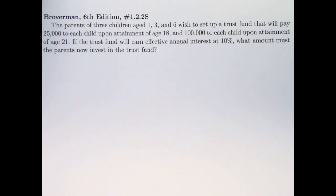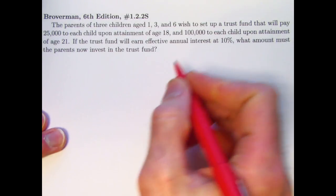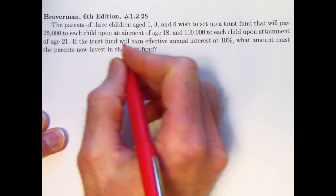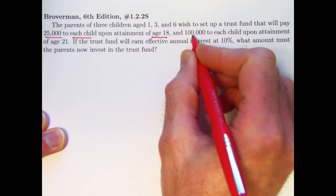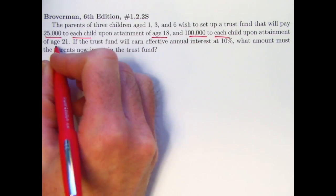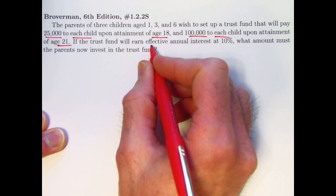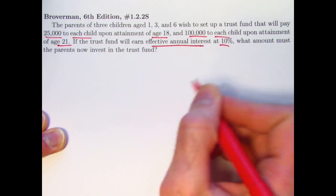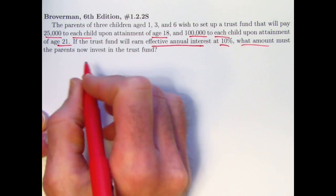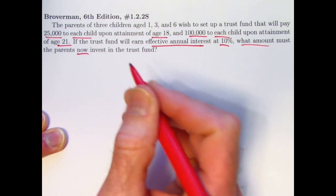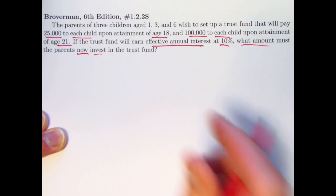And here's the way the problem is stated. The parents of three children aged 1, 3, and 6 wish to set up a trust fund that will pay $25,000 to each child when they reach age 18 and then $100,000 to each child when they reach age 21. The trust fund earns an effective annual interest rate of 10% that's assumed to be compounded annually here. What amount must the parents now invest in the trust fund to be able to make these future payments?